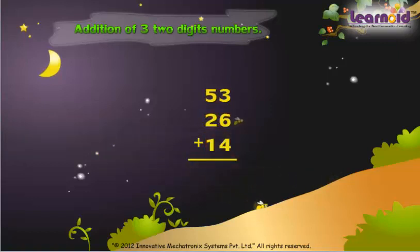First we will add numbers of one's place. 3 plus 6 is 9, 9 plus 4 is 13.